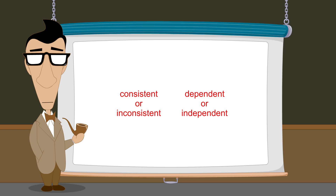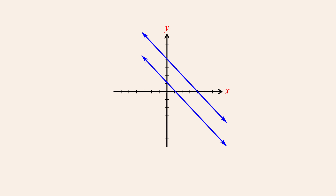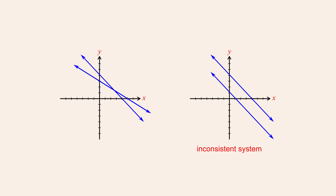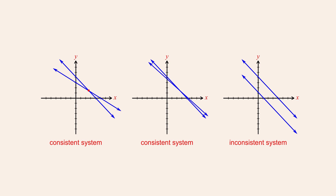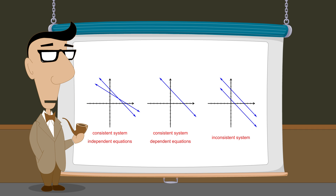So what exactly do these terms mean? Any system of equations for which no solution exists is said to be inconsistent, and any system with one or more solutions is said to be consistent. The consistent systems we have seen may have a single solution when the equations describe different lines, or an infinite number of solutions when the equations both describe the same line. Equations which describe different lines are said to be independent, and equations which describe the same line are called dependent. So consistent systems with independent equations have one solution, consistent systems with dependent equations have an infinite number of solutions, and inconsistent systems have no solutions.